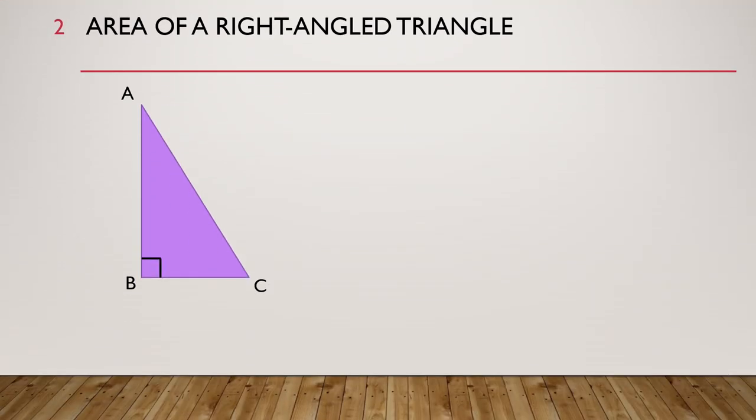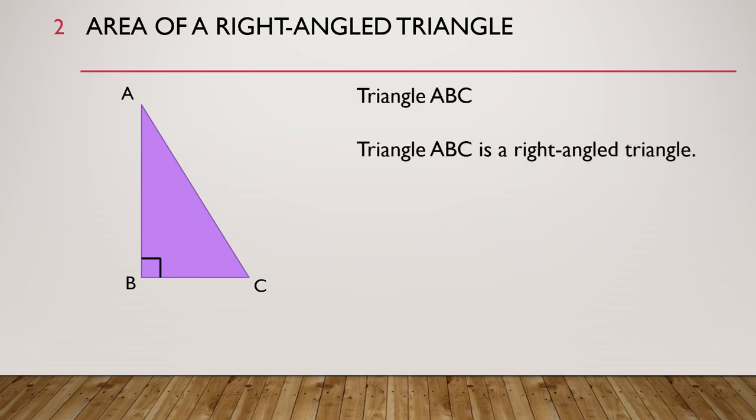Here we have triangle ABC. Triangle ABC is a right-angled triangle because there is a right angle in the triangle, angle ABC.